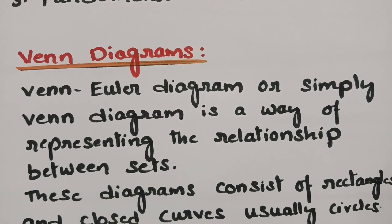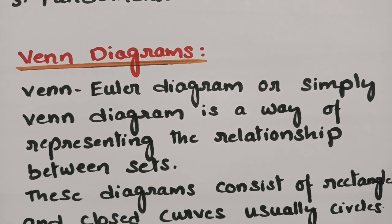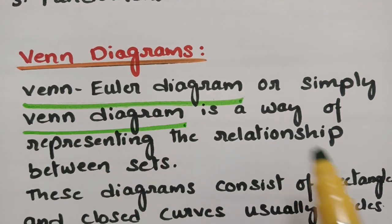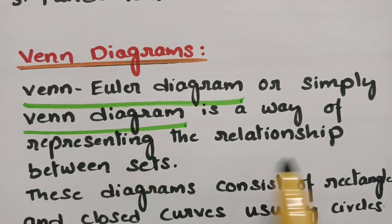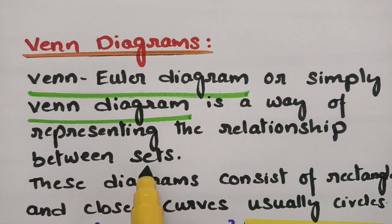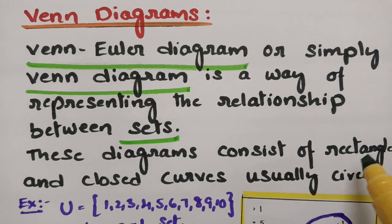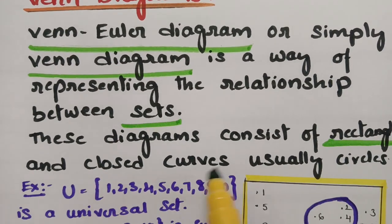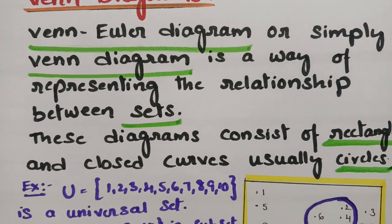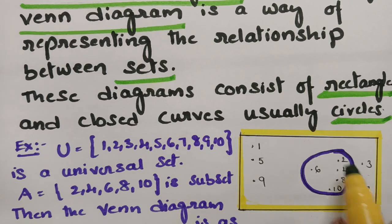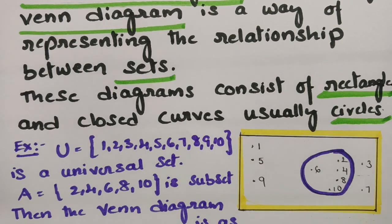Venn diagrams — also called Venn-Euler diagrams, or simply Venn diagrams — are a way of representing the relationship between sets. These Venn diagrams consist of rectangles and closed curves, usually circles. So it is a rectangle in shape and in between there will be circles.